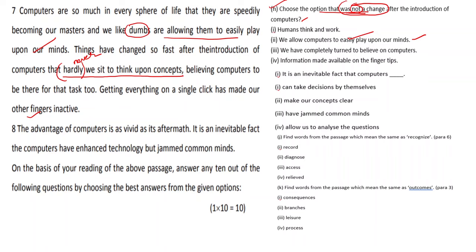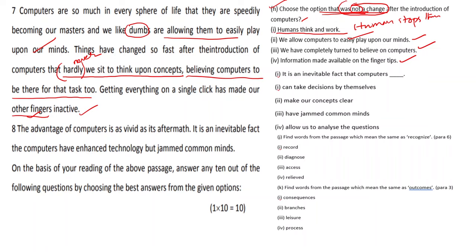So we have completely turned to believing in computers — that is a change. Information made available at the fingertips with a single click — that is also a change. The option 'humans think and work' was NOT a change mentioned in the passage, because the passage says humans stop thinking due to over-dependence on machines. So 'humans think and work' is the answer — the one that was not a change — because the passage says humans stop thinking through overuse of computers.